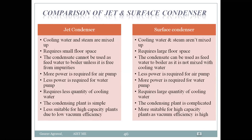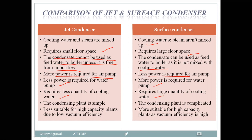Here is a comparison between surface condensers and jet condensers. In jet condensers, cooling water and steam are mixed directly; in surface condensers, they are not. Jet condensers require a small floor area; surface condensers require a large floor area. Condensate from jet condensers cannot be reused as boiler feed water unless free from impurities, whereas in surface condensers it can be reused. Jet condensers require more power for the air pump; surface condensers require less. Jet condensers need less cooling water; surface condensers need more. Jet condenser construction is simple; surface condenser construction is complex due to the use of separate tubes. Surface condensers are preferred for high capacity plants.